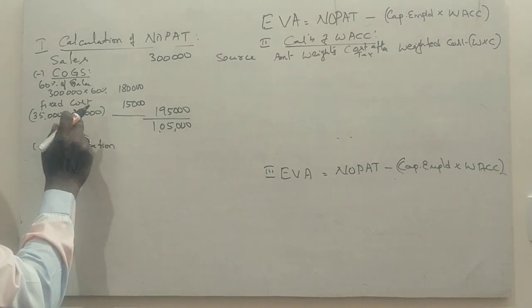Gross profit is 1 lakh 20,000. From this we deduct fixed costs. We need to separate depreciation, so 35,000 minus 20,000 depreciation equals 15,000 in operating costs. Subtracting these gives us 1,05,000. Minus depreciation 20,000 equals 85,000 Earnings before tax.